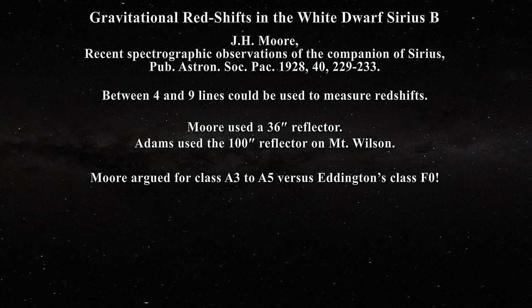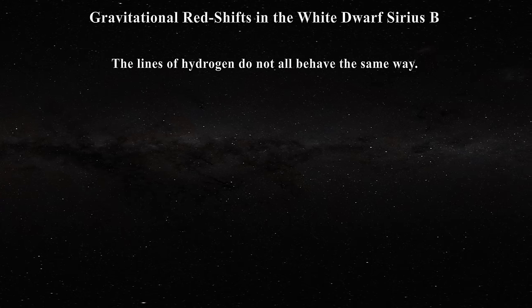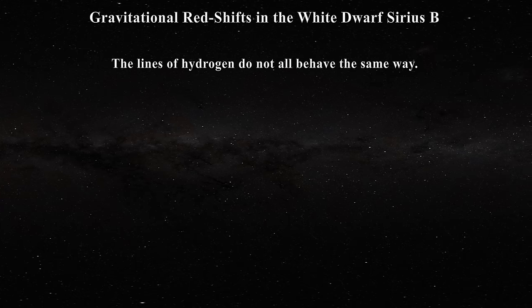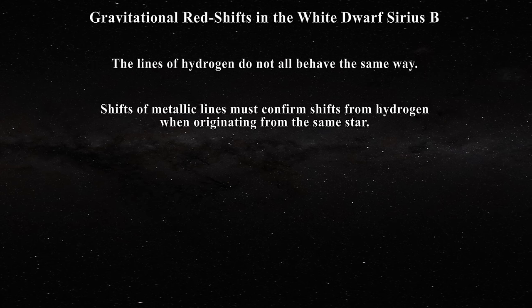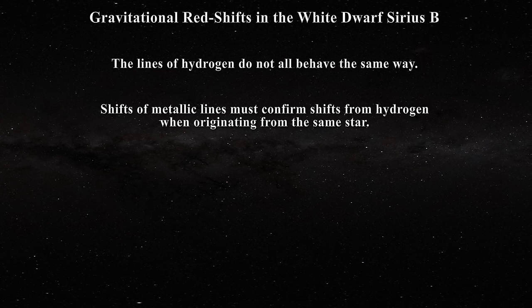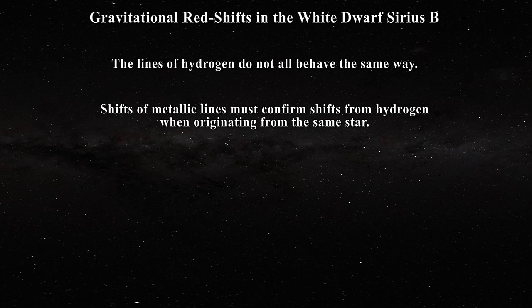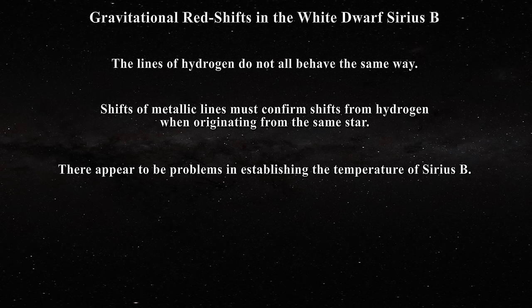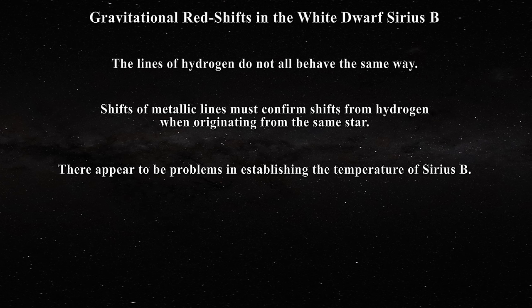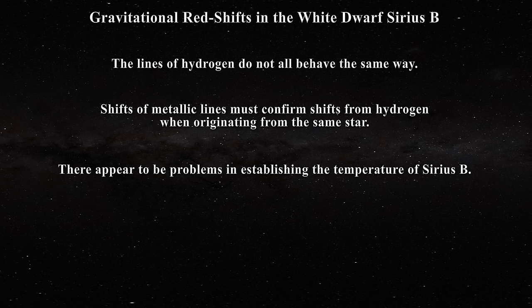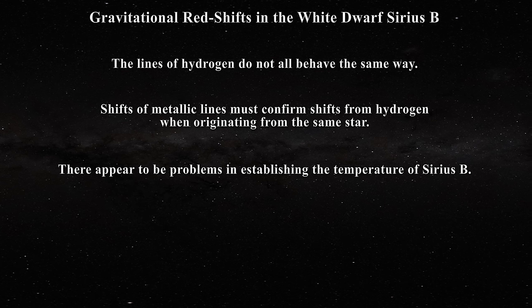There are lessons to be learned from all this. First, all the lines of hydrogen did not behave the same way, as must be the case if gravitational redshift results were to be taken seriously. Second, watch out for the shifts of metallic lines — they must also confirm the shifts obtained from the hydrogen Balmer lines. And third, there appear to be problems with establishing a temperature for Sirius B. The sad part is that Adams' measurement would dominate astrophysical thought for the next 45 years.